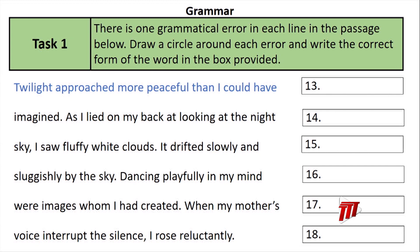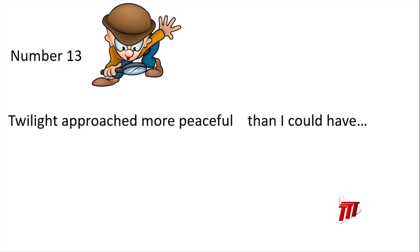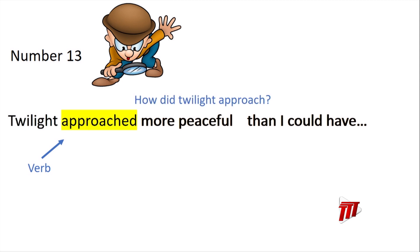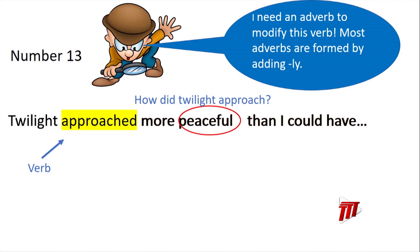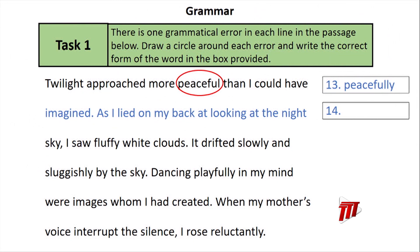Number 13: 'Twilight approached more peaceful than I could have.' The verb is 'approached,' and we need to know how Twilight approached — so we need an adverb, not an adjective. 'Peaceful' is an adjective; most adverbs end in -LY. Therefore, we have to change it to 'peacefully.' Twilight approached more peacefully than I could have imagined.